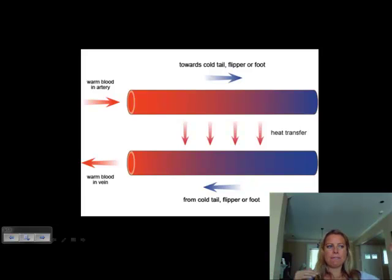If that cold blood was going to come back into the heart, it would be too cold, and it would actually shock the heart, possibly in a cardiac arrest. So what's going to happen is you're going to have that warm blood coming from the heart set up right below the cold blood that's coming from the extremities. And as they pass each other, that warm blood is going to give off its heat to that cold blood and warm it up before it gets to the heart and shocks the heart.